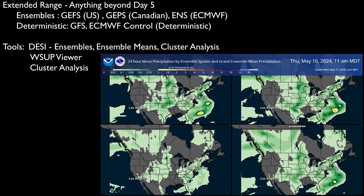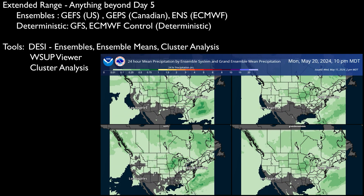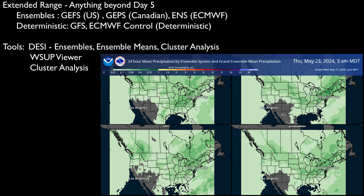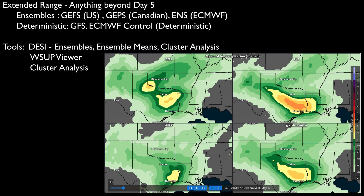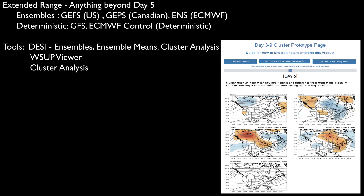DESI can also be used to look at each individual ensemble system mean to see if there are model-specific patterns and what the differences are between ensemble systems. One would hope that they are relatively close, but sometimes these differences are quite noticeable and have major impacts on forecast uncertainty. External to DESI is the WPC cluster page. Each can serve as a backup to the other should there be issues, but they can also provide slightly different views of potential outcomes in the ensemble and probabilistic data.